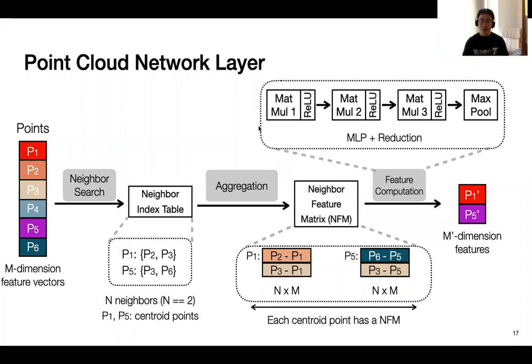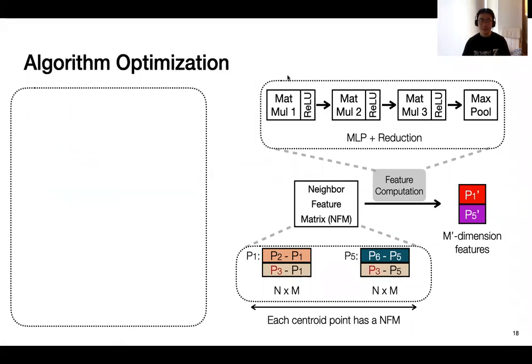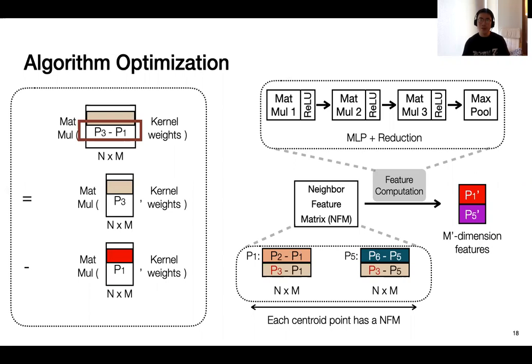So remember, this is how a point cloud network layer looks like. So here, we have developed an algorithm optimization that can tremendously reduce the workload of feature computation. So the input to this step are feature matrices produced from the previous step. And the computation here is mainly matrix-matrix multiplication. And also remember that all these feature matrices are made up of individual feature vectors. And also, these vectors are originally normalized from individual point features. So mathematically here, we can sort of decompose the computation into two individual steps. And that is to say, we can do feature computation for P3 and P1 individually. And then we can do the normalization later.